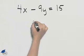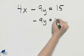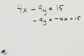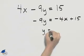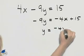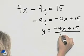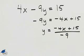So our first step is to subtract 4x from both sides and that will give us minus 4x plus 15. Then we can divide both sides by negative 9 and so we will have negative 4x plus 15 over negative 9.